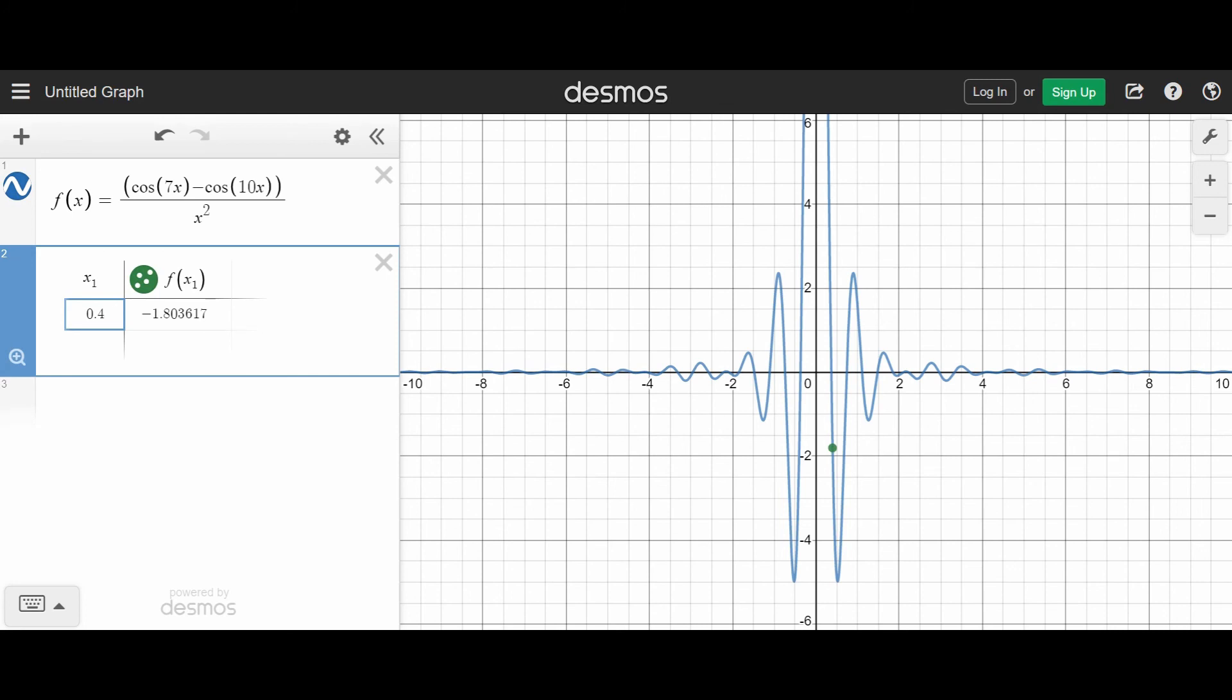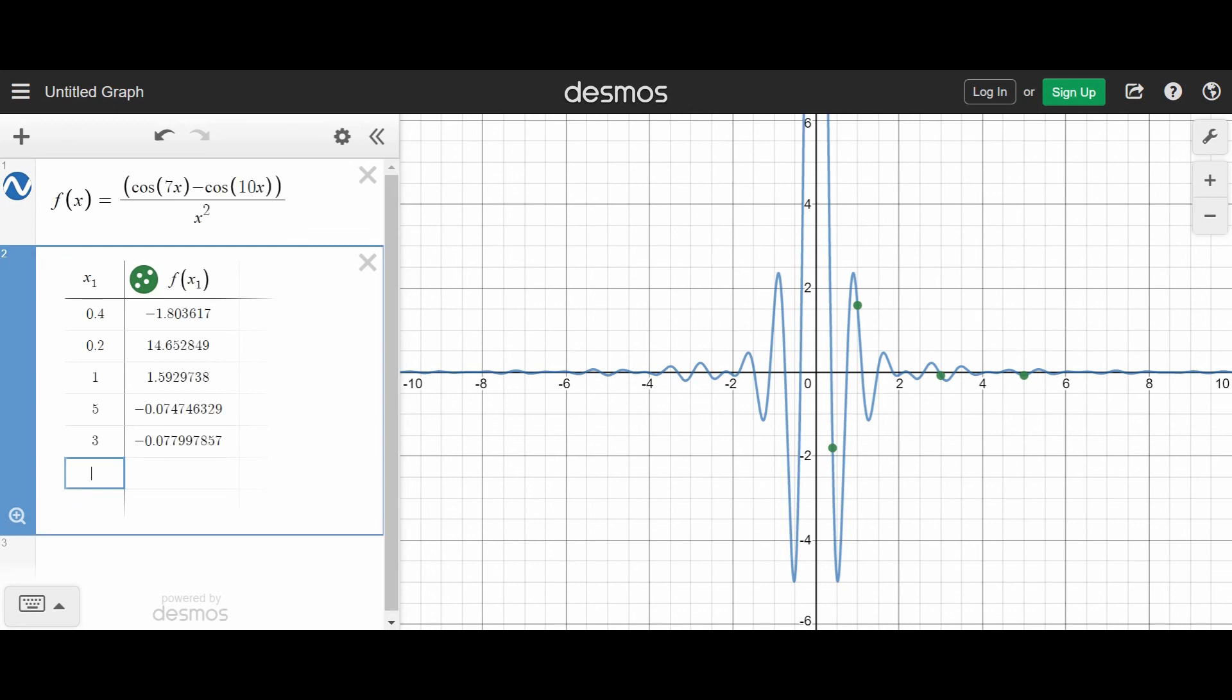And so when I type in x values in here, 0.4 for example, notice I get that same number that I got before. If I type 0.2, I get the same number that I got before. And so I don't even have to type in the f anymore. Now I can just type in whatever x values I want. So any old number I want, I can create a table.